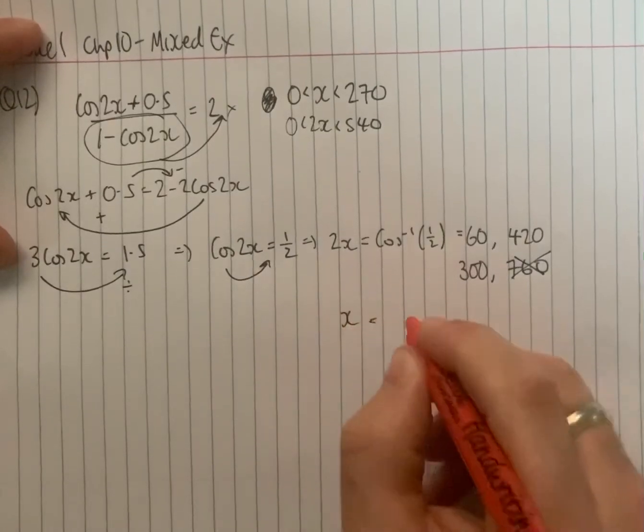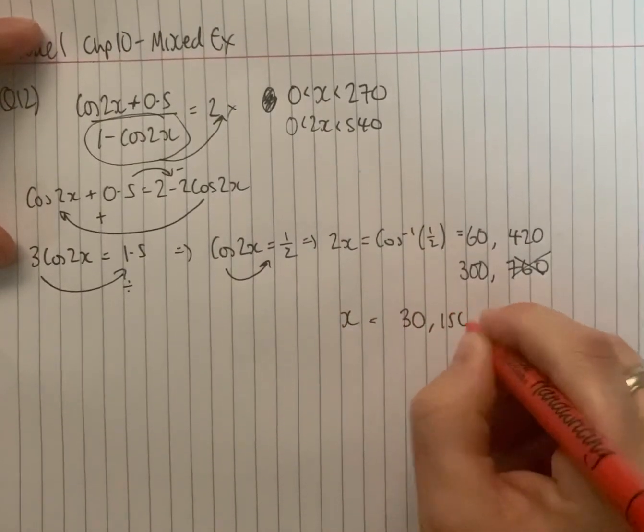And then for x we just halve them all. So we should have answers 30, 150, and 210.